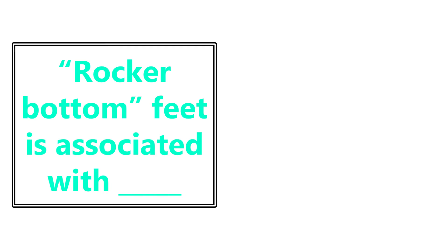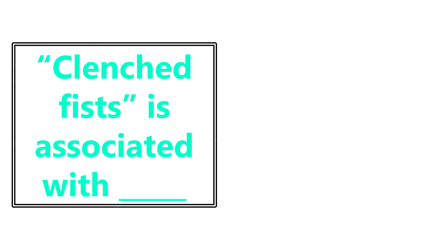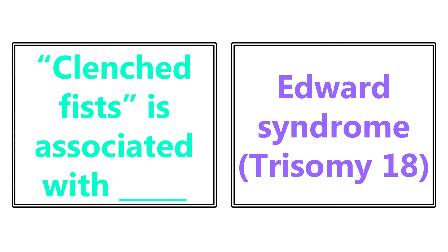Rocker bottom feet is associated with Patau syndrome — trisomy 13. They may describe it or give a picture; make that association for easy points. Clenched fists is associated with Edwards syndrome — trisomy 18. If you see rocker bottom feet, think Patau syndrome; if you see clenched fists, think Edwards syndrome.